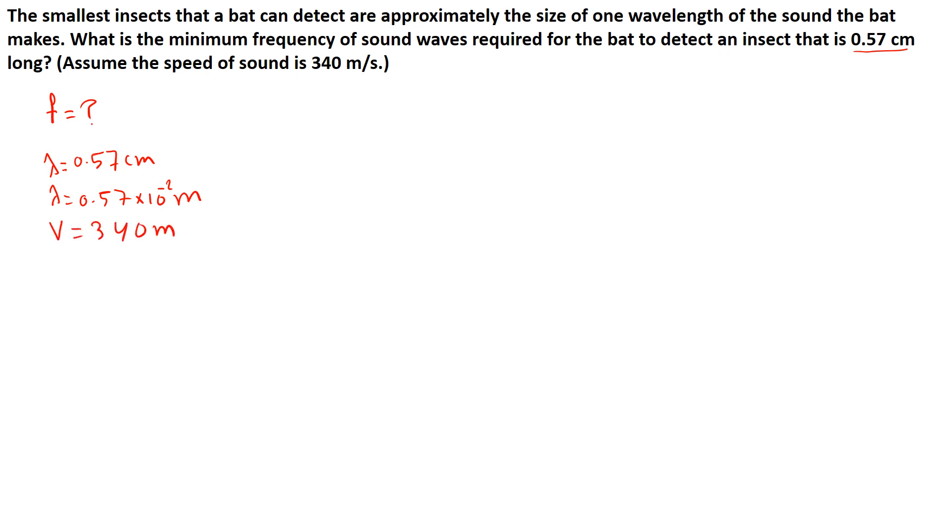Assume that the speed of sound is 340 meters per second. Okay, now we use the wave speed equation V equals lambda F. 340 is the speed, equals lambda which is the wavelength, which is 0.57 times 10 to the power of negative 2, times F.